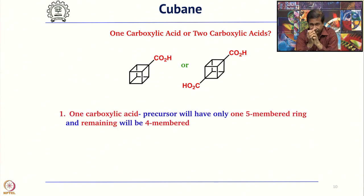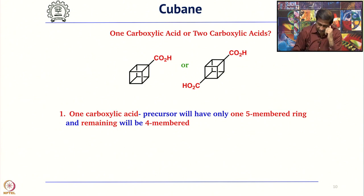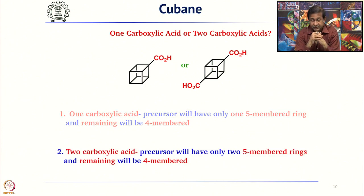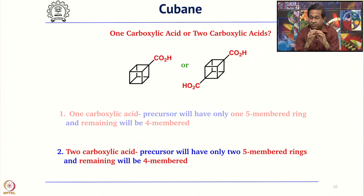If you take one carboxylic acid, the precursor will have one — ideally two — five-membered rings. Whereas if you take two carboxylic acids, you will have more five-membered rings. That means by converting more four-membered rings into five-membered rings, your job becomes much simpler. It is better to construct four-membered rings at the end rather than at the beginning.